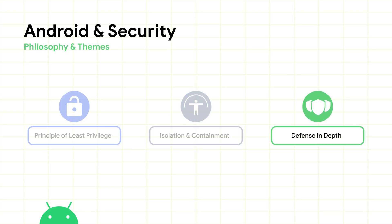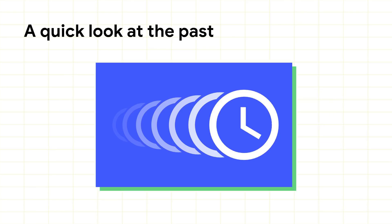Finally, defense in depth means that we shouldn't rely on a single component in the system to reason about the security of the entire platform. We believe in engineering the platform such that we have multiple defenses to keep our users safe. Android is the most popular and most secure consumer OS in the world today, but this didn't happen all at once — it took us and the ecosystem almost a decade to get to a point where we could have high confidence in the security of Android devices.